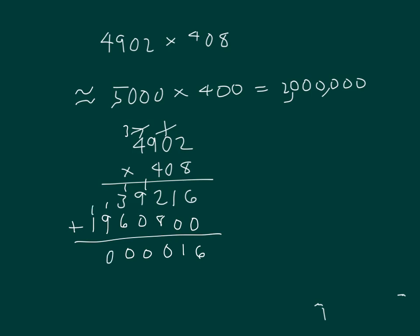And 1 and 1 is 2. Place my commas. And I have the actual product equaling 2,000,016, which is close to our estimate of 2,000,000.